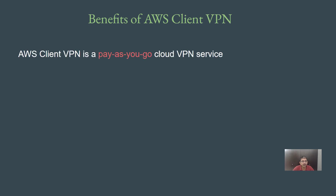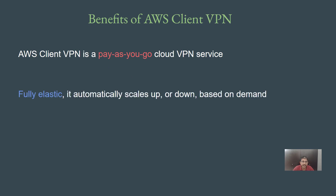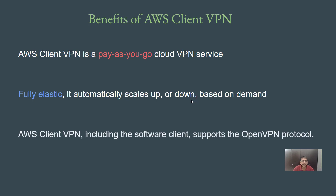The first primary benefit is that Client VPN supports pay-as-you-go pricing, which is quite beneficial. The second is that it is fully elastic — it can automatically scale up or scale down based on demand, which is very useful. The third primary benefit is that the AWS Client VPN, including the software client, supports the OpenVPN protocol. OpenVPN protocol is very popular and this support makes migrations quite easy as well.